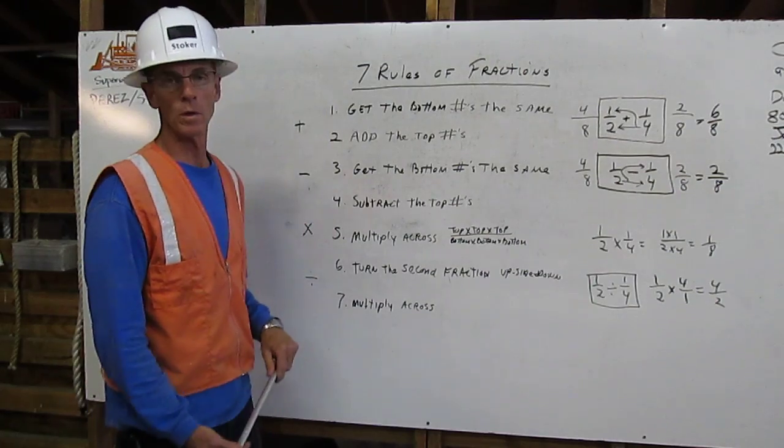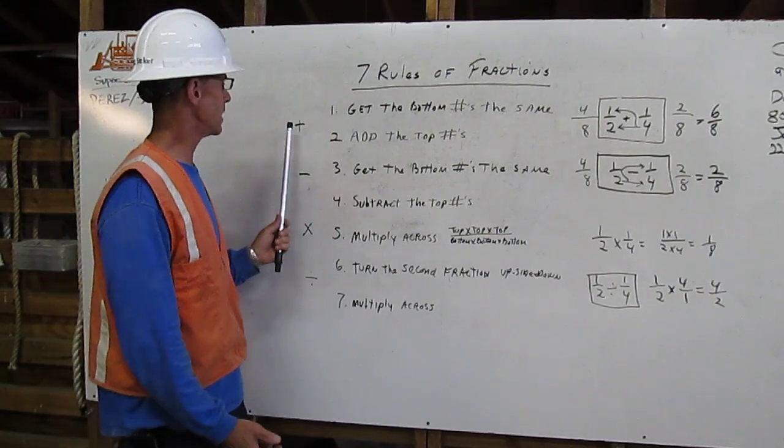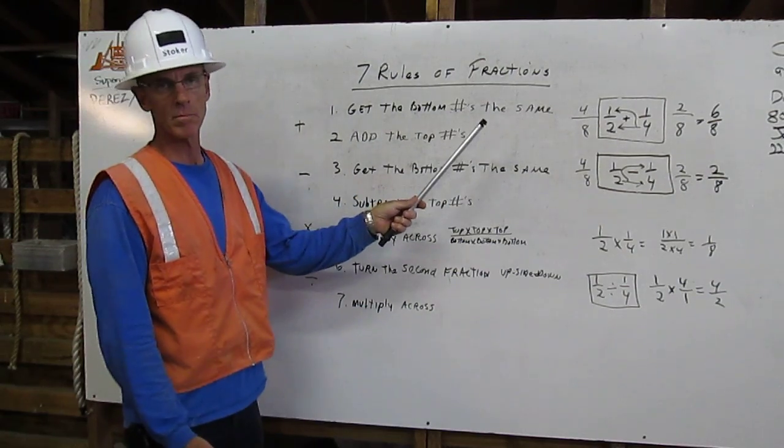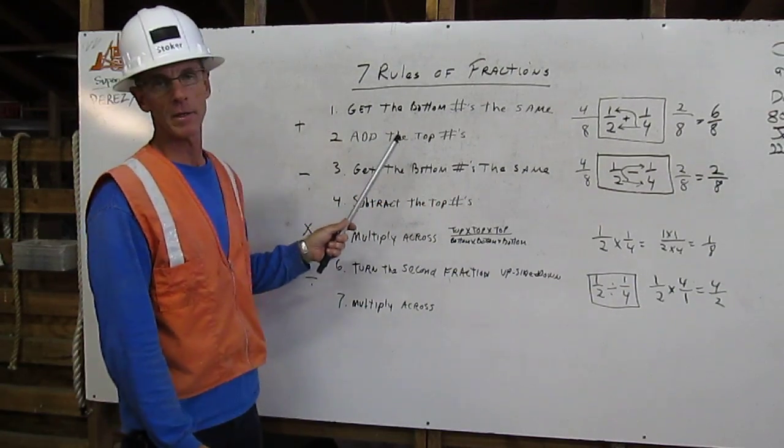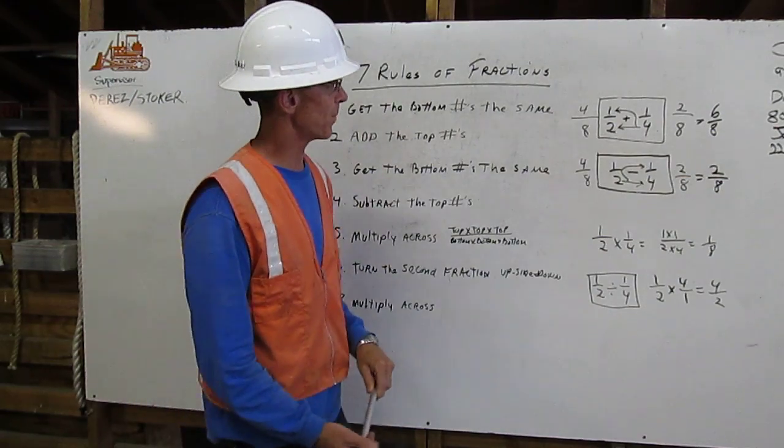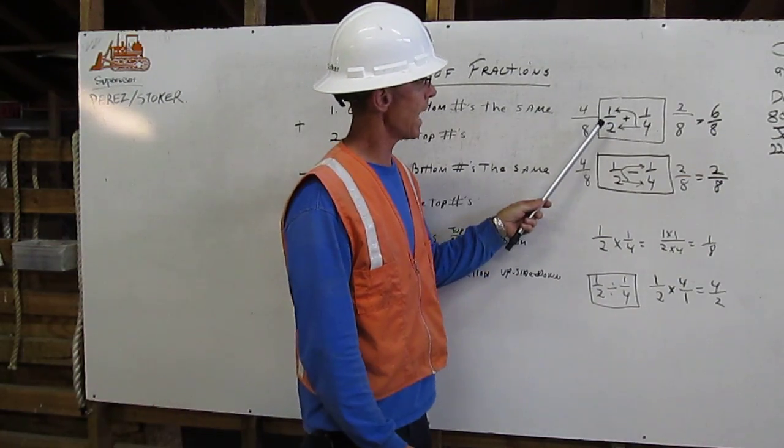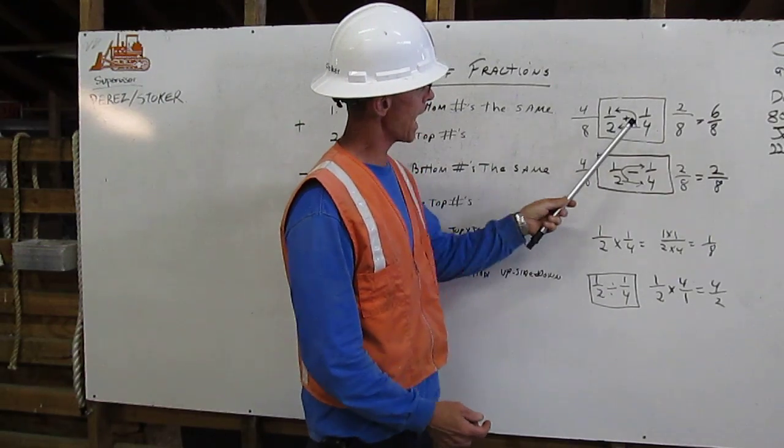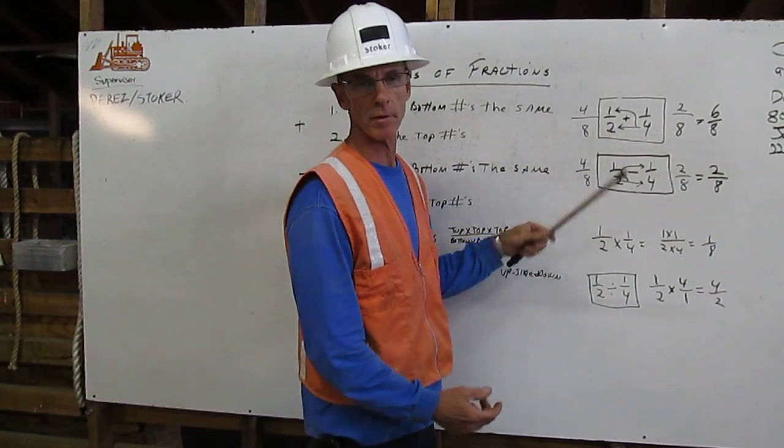The first rule we'll go over today is adding fractions. The first rule is get the bottom numbers the same. The second, add the top numbers. Here's an example. We've got one-half plus one-fourth. We can't add these because they've got different bottom numbers.